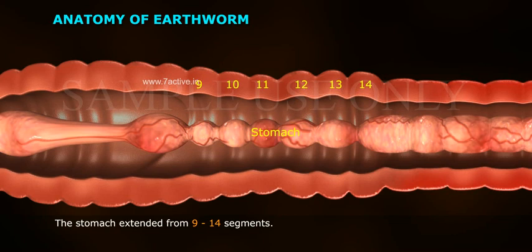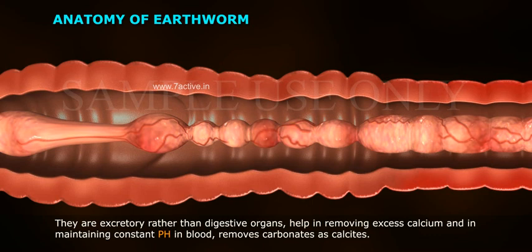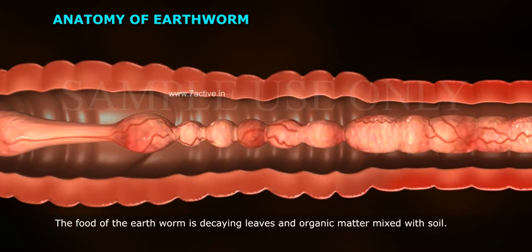The stomach extends from segments nine to fourteen. Calciferous glands are present in the epithelium of the stomach. They are excretory rather than digestive organs, and help in removing excess calcium and in maintaining constant pH in blood, removing carbonates as calcites. The food of the earthworm is decaying leaves and organic matter mixed with soil.